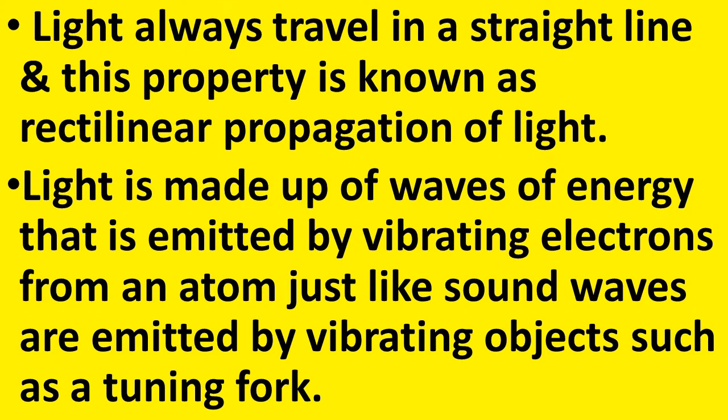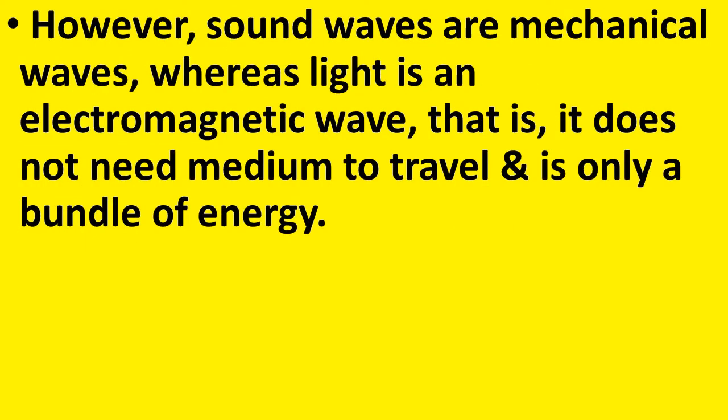Light is made up of waves of energy that are emitted by vibrating electrons from an atom, just like sound waves are emitted by vibrating objects such as a tuning fork. Light waves are waves of energy emitted by vibrating electrons. However, sound waves are mechanical waves whereas light is an electromagnetic wave — it does not need any medium to travel and is only a bundle of energy.